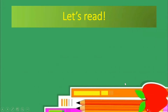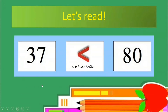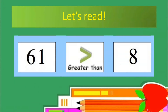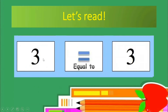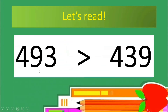Now let's try to read the numbers. 37 is smaller than 80 — now your turn. Good! 61 is greater than 8 — now you try. Good! 3 is equal to 3 — try it. Very good! Now let's go higher: 493 is greater than 439 — your turn.